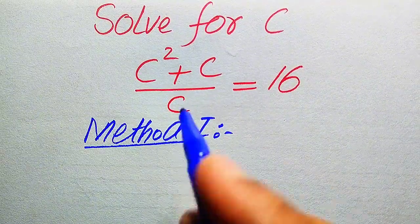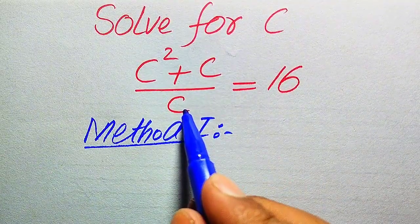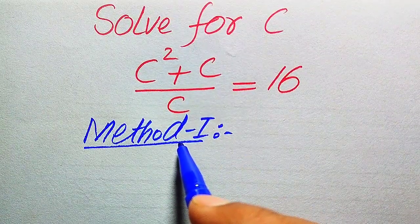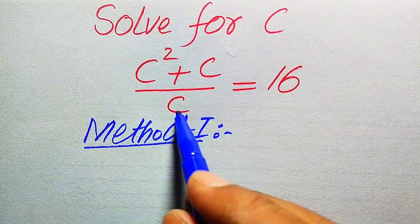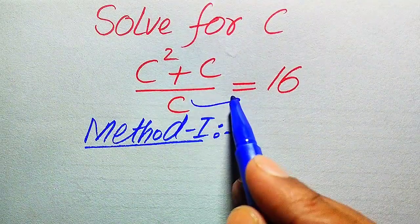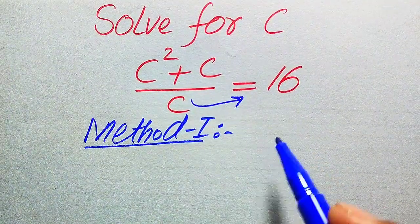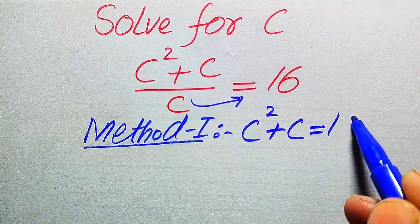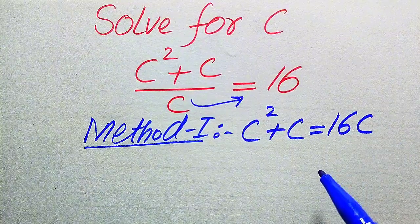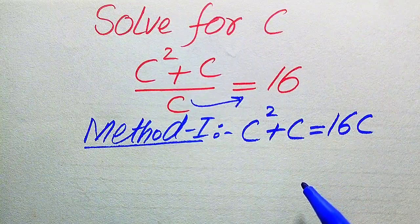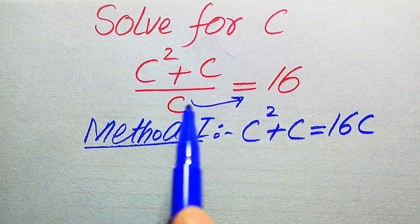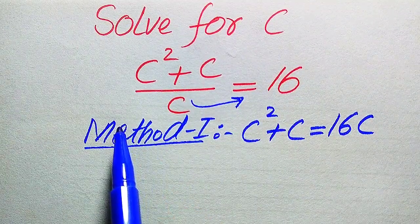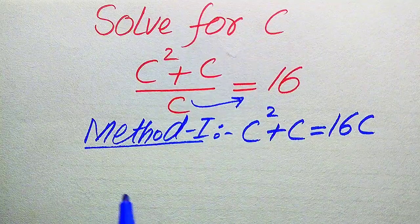In the first method, c is divided by both terms, so we move c to the right-hand side where it is multiplied by 16. This gives us c² + c = 16c. This is a second-order equation, which means it has two roots, and we will find both of them.